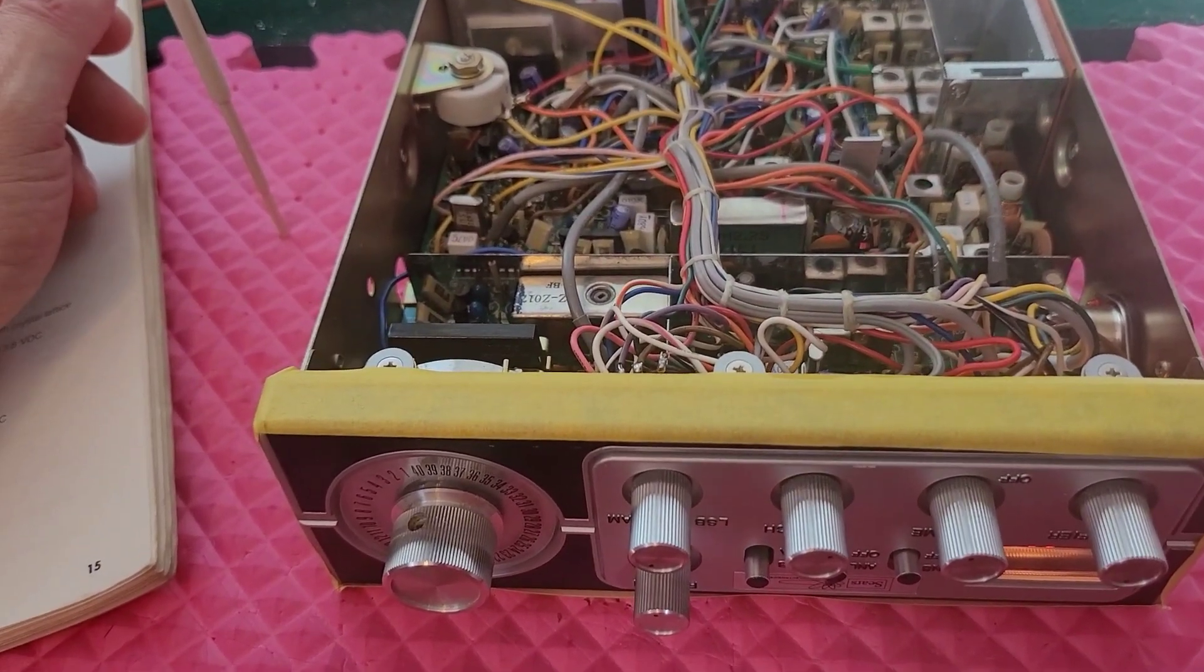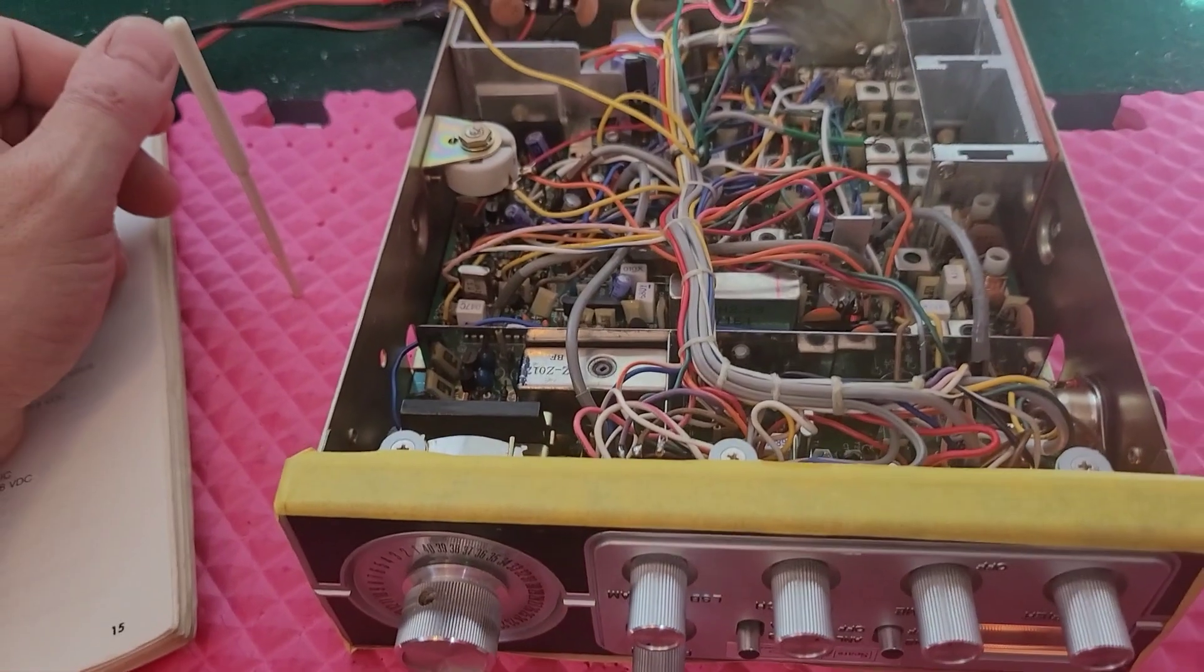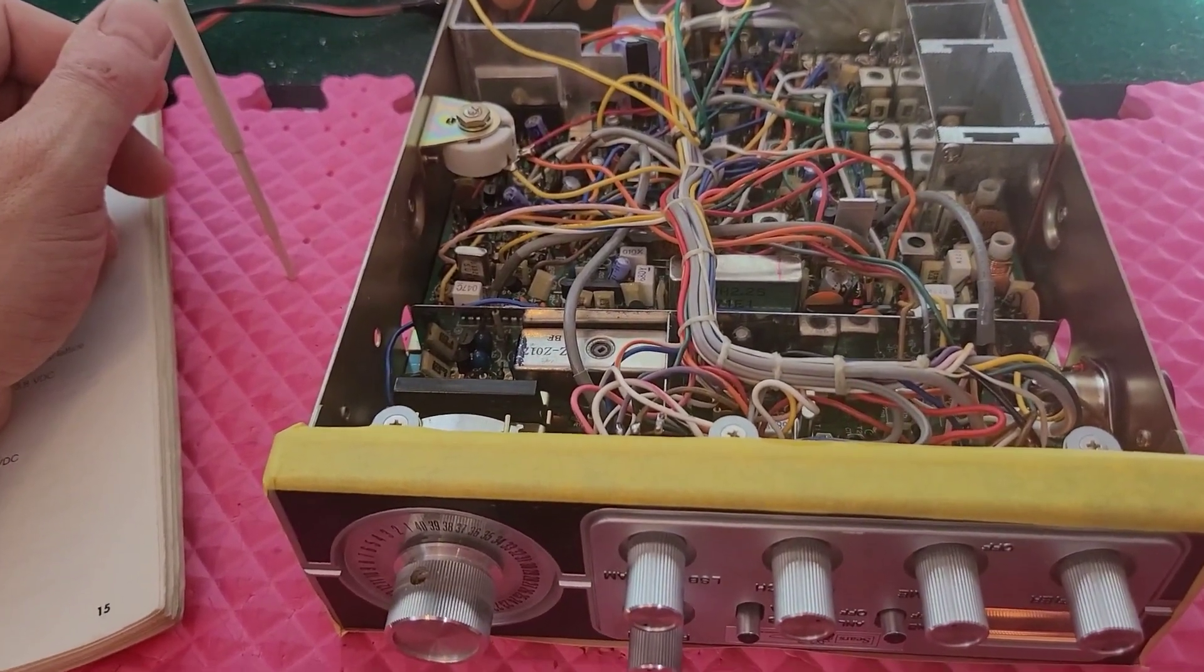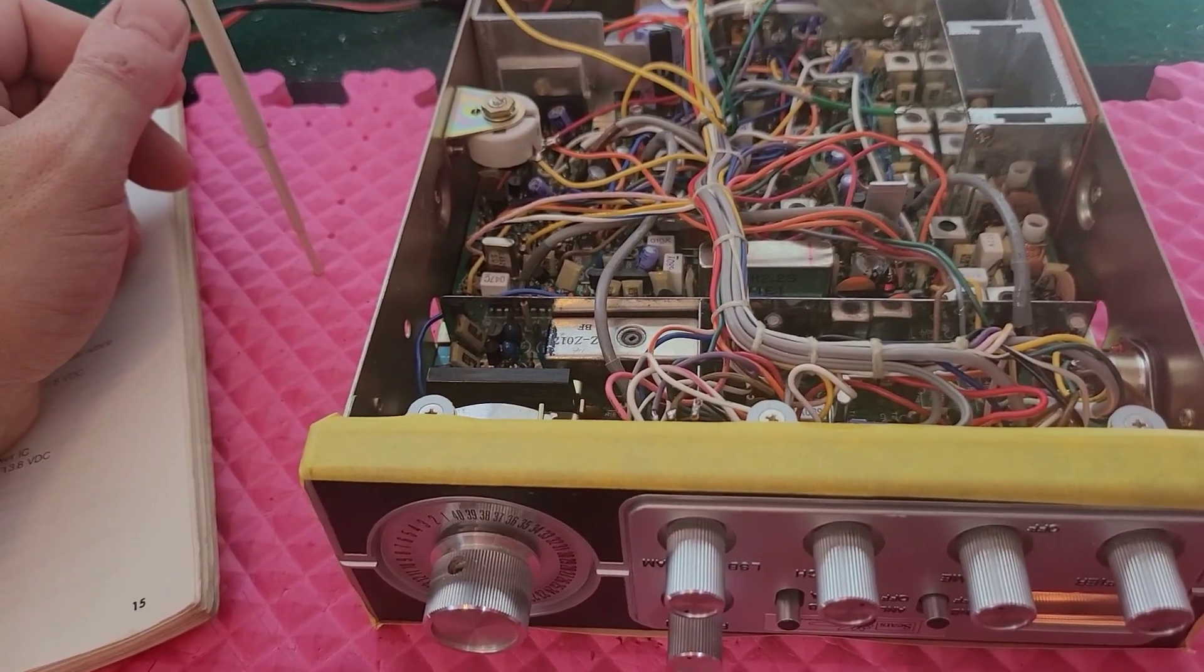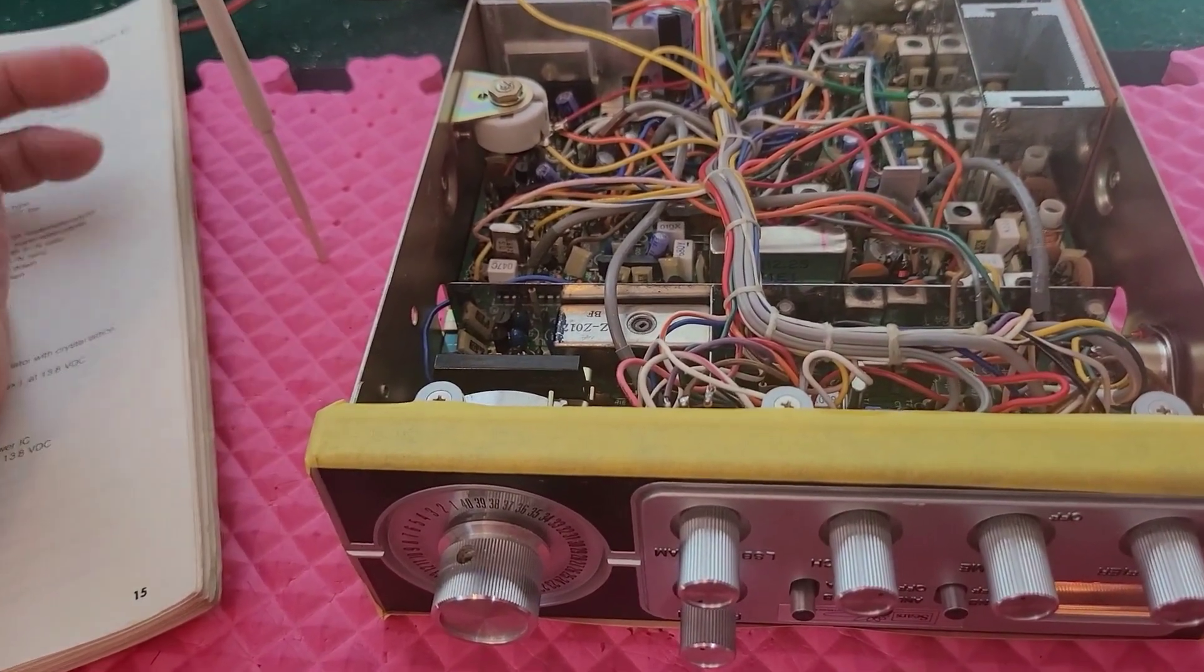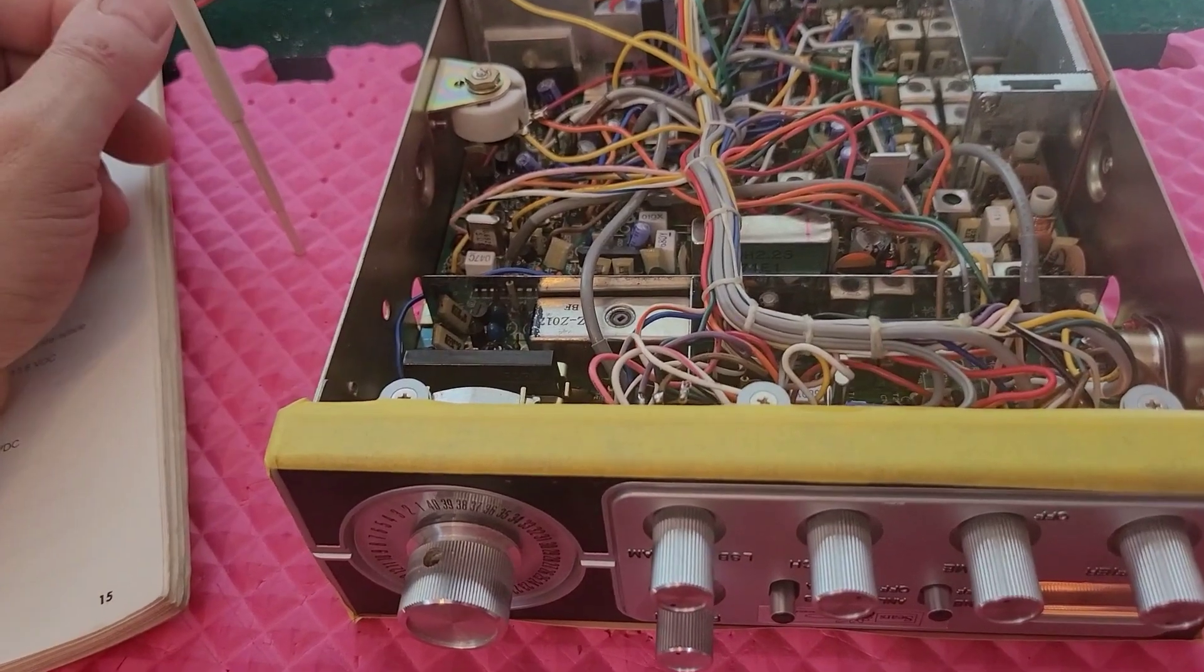When you look at SINAD itself, I'm going to assume that nobody knows what SINAD is. Basically, this radio is getting fed a minus 110 dBm signal at 30% modulation.